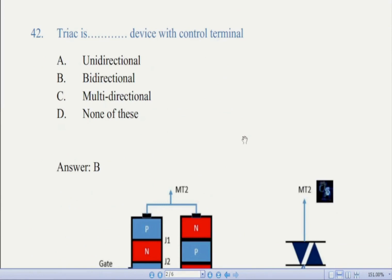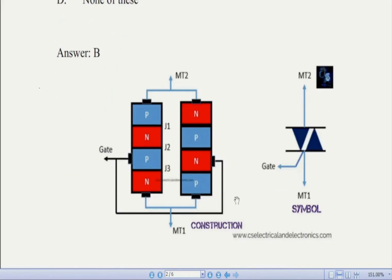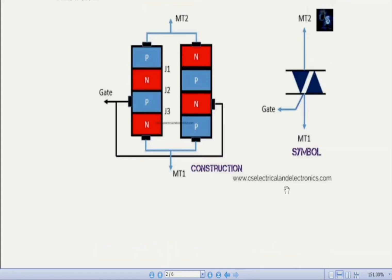Now we come to question number 42: TRIAC is a dash device with control terminals — there are four options. The correct answer is B, bidirectional. This is the construction diagram of the TRIAC, and this is its symbol.